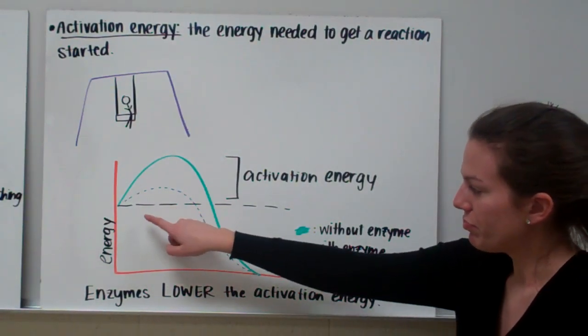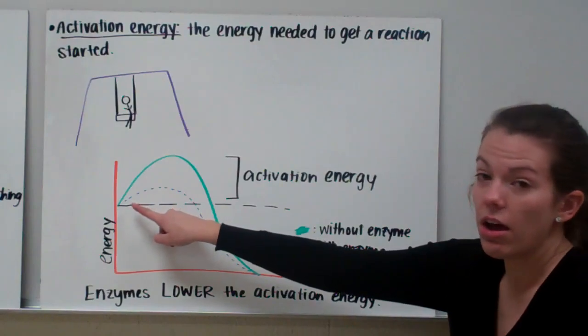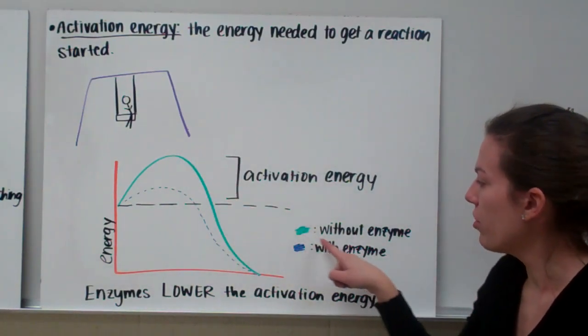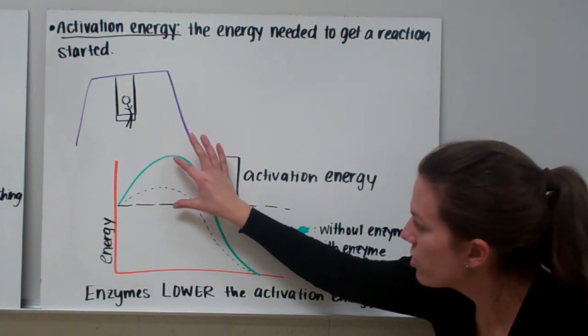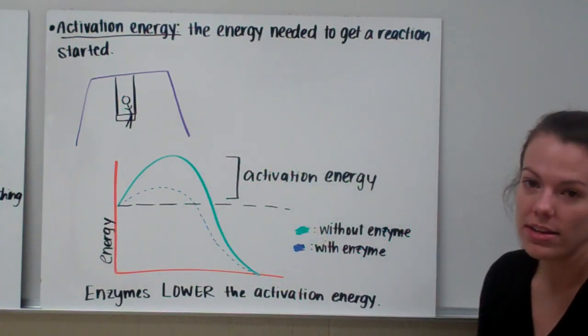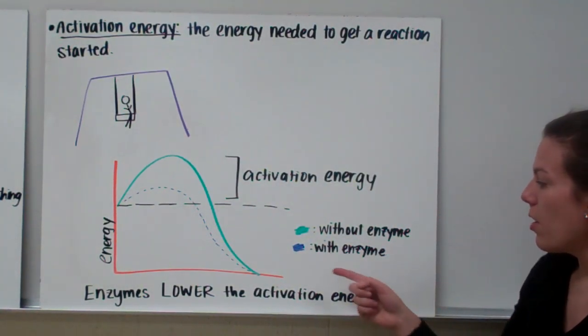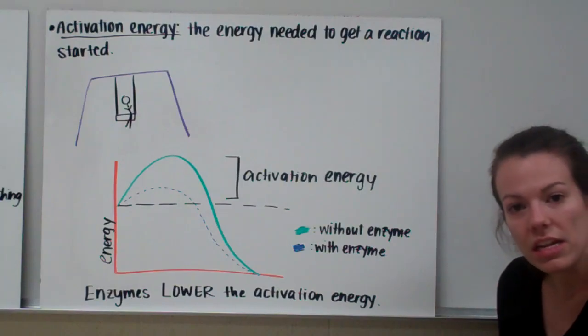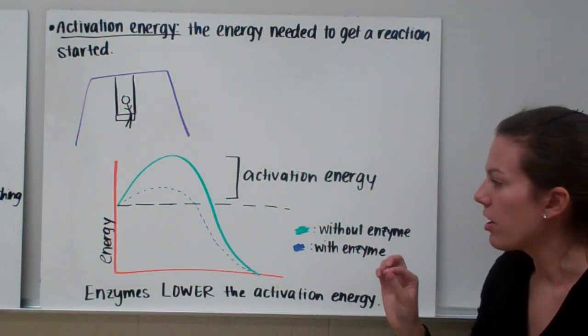If we look at our energy, we'll see a reaction without an enzyme, the green color. It takes a lot more energy to get started. It takes this much energy to go in to get that reaction started. But with an enzyme, we don't need as much energy. We only need a little bit of energy to get started.